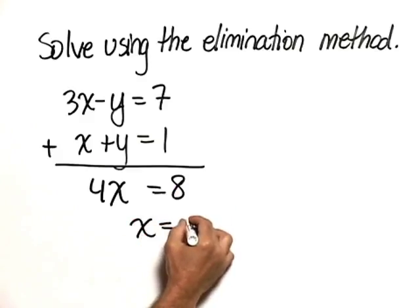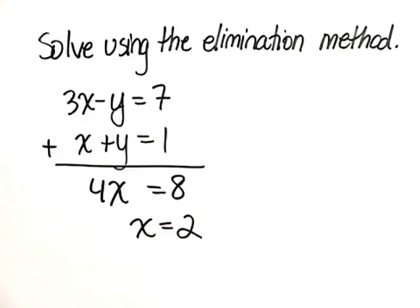Divide both sides by 4. 8 divided by 4 is 2. So we know x is equal to 2.